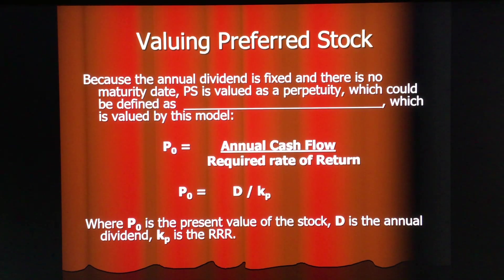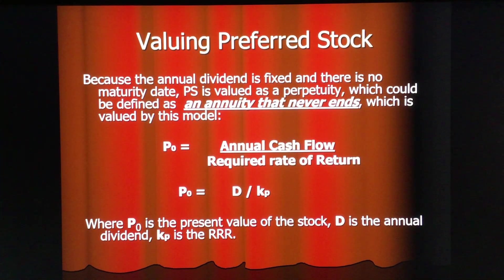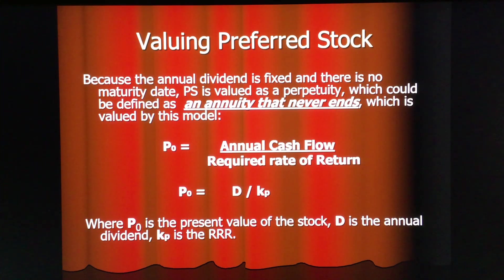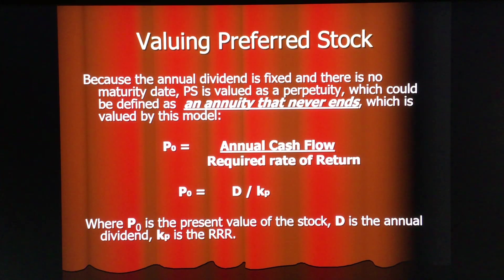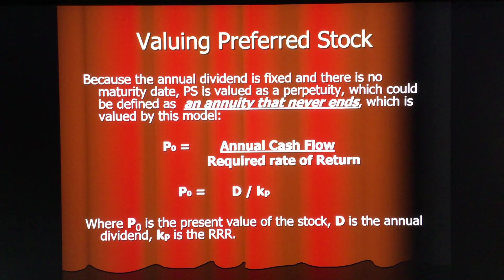Because the annual dividend is fixed and there's no maturity date, preferred stock is valued as a perpetuity — an annuity that never ends. The valuation model is very simple: the price, or present value at time zero, is the annual cash flow divided by the required rate of return. For preferred stock specifically, we designate that annual cash flow as D — the dividends — and the required rate of return is designated as kp.